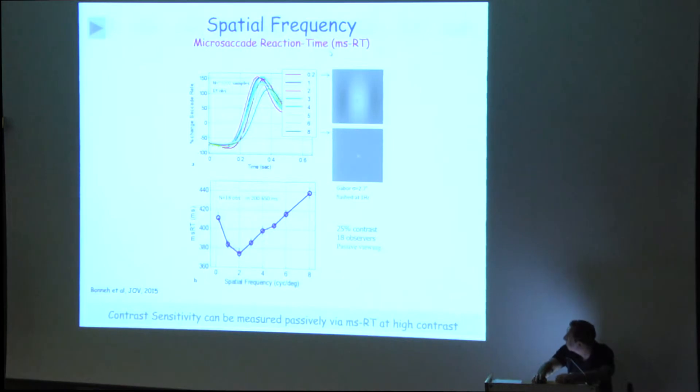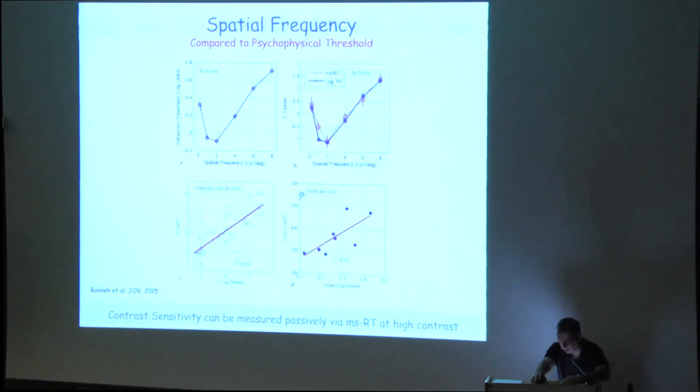We do the same thing for spatial frequency. This is the low spatial frequency, high spatial frequency. And we can actually reconstruct something which is equivalent to a contrast sensitivity function. This is the microsaccade RT as a function of spatial frequency, from low spatial frequency to high spatial frequency. And actually it becomes faster until it gets here to 2 cycles per degree. And then it becomes slower. This is the average of 15 observers, I think. And actually it matches in z-value very nicely the contrast sensitivity threshold of the same individual. There is a nice correlation across the individual.